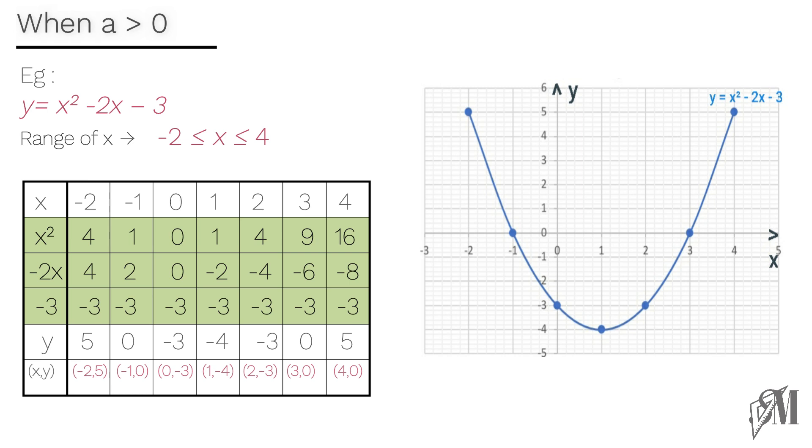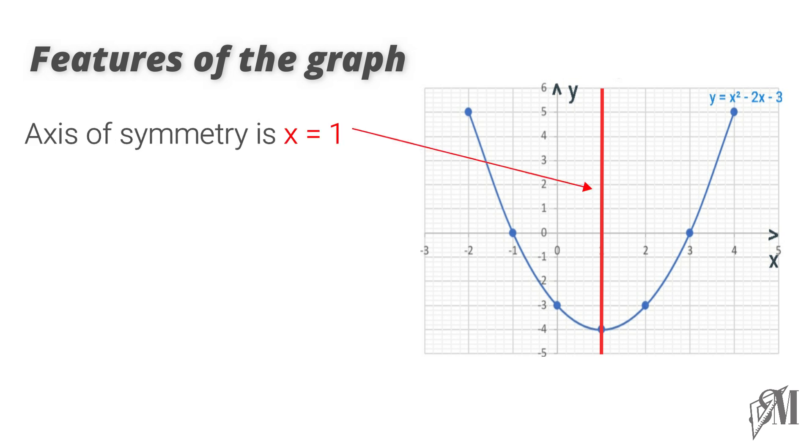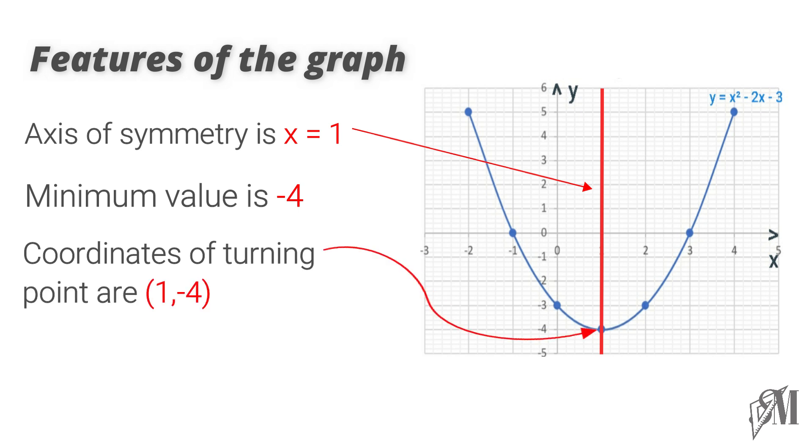The graph plotted will be like this. Now look at these characteristics of the graph. Mind that the word function here refers to the graph and specifically to the values of y. The graph is symmetric, that is it can be divided into two equal parts along the line x equals 1. So x equals 1 is called the axis of symmetry. You can see the lowest value of y is minus 4, thus minus 4 is called the minimum value. Then as the graph turns at this point, the coordinates of the turning point are 1 and minus 4.